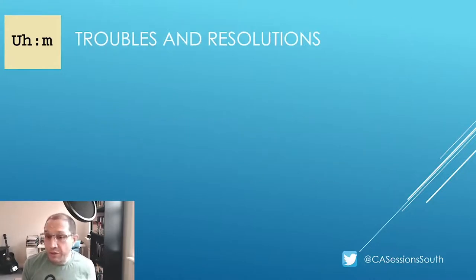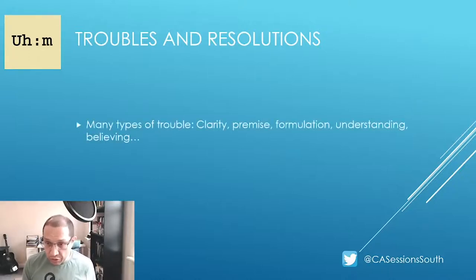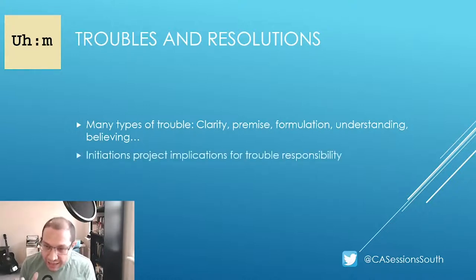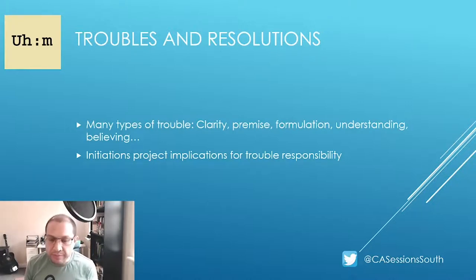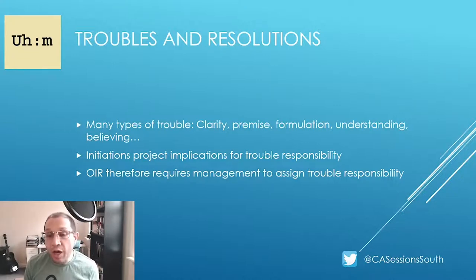When it comes to trouble sources and resolutions, there are several possible reasons why a turn might be problematic, and these can be projected in the repair initiation. Trouble sources include problems with clarity, premise, formulations, understanding, and so on. Repair initiations can have implications for the impression of who is responsible for the trouble source, and this includes open class repair initiators such as 'huh?' As such, other-initiated repair can be seen as requiring management to clarify the assignment of trouble responsibility.